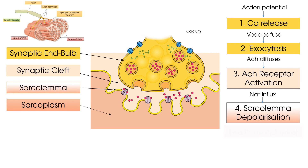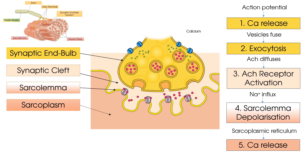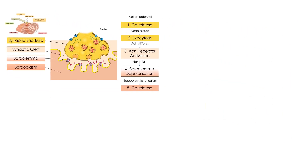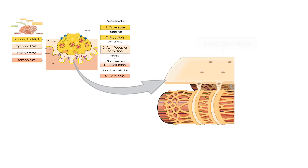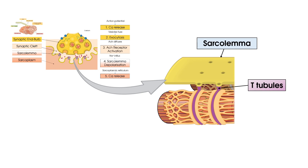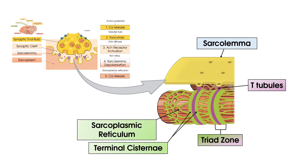The next step is looking at how the action potential gets from that sarcolemma depolarisation all the way down to the muscle fibre centre and the sarcoplasmic reticulum to cause calcium release. The action potential runs down the sarcolemma and then, as covered in the previous tutorial, goes down through the T-tubules up to the triad zone. This causes a release of calcium from the sarcoplasmic reticulum, and now let's look in more detail at what occurs at the triad zone to allow this to happen.